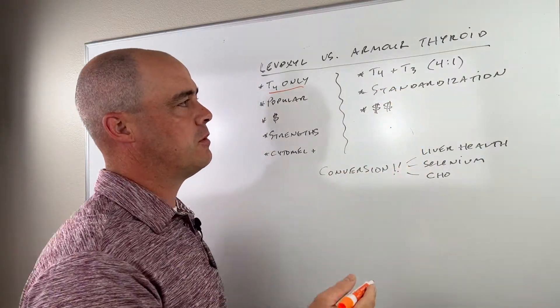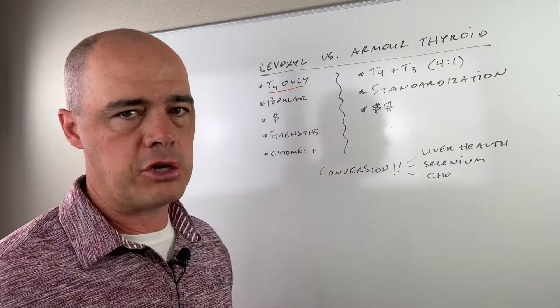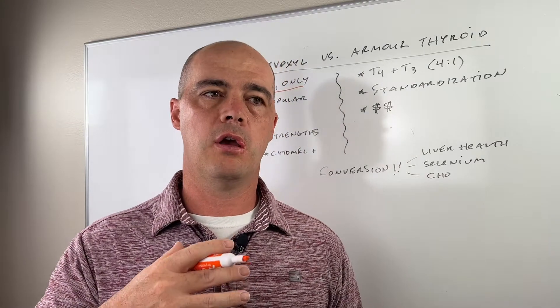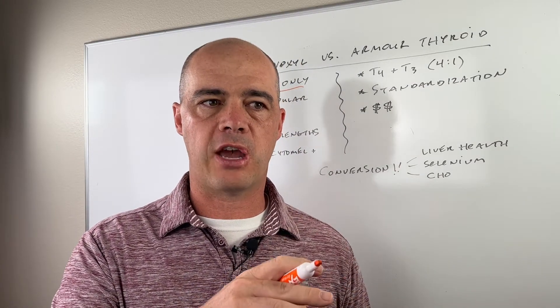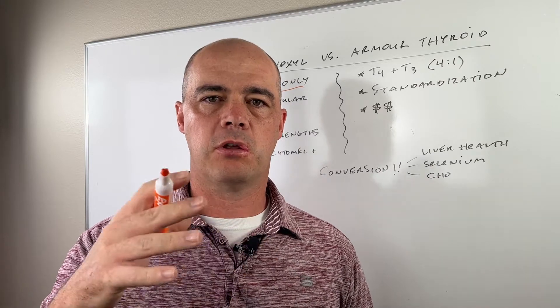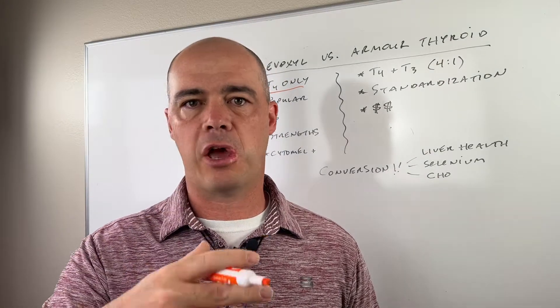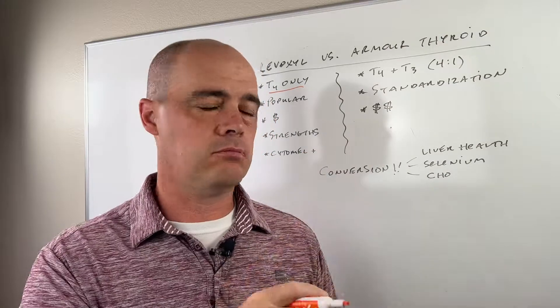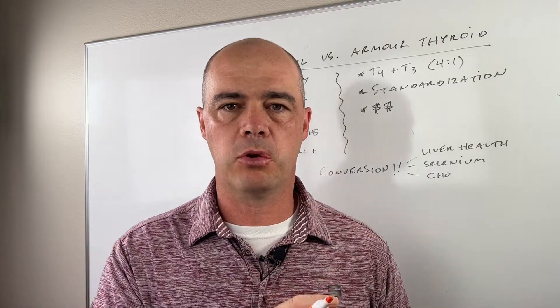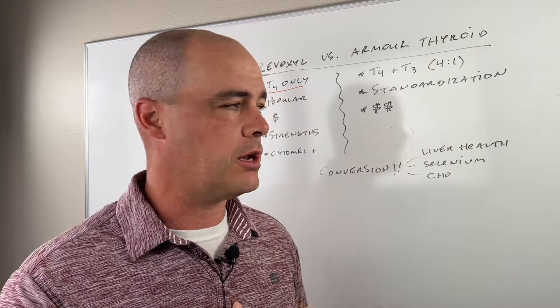Armor Thyroid is a mixture of T3 in about a 4 to 1 ratio. And the reason it's 4 to 1 versus the 11 to 1 that your body produces naturally is because some of the pharmacokinetics and the half-life and stuff's broken down quicker. So this fairly closely resembles what's ultimately going to end up in the body.